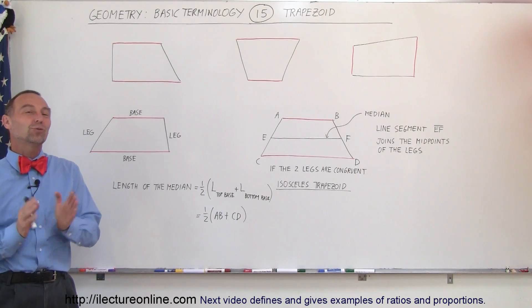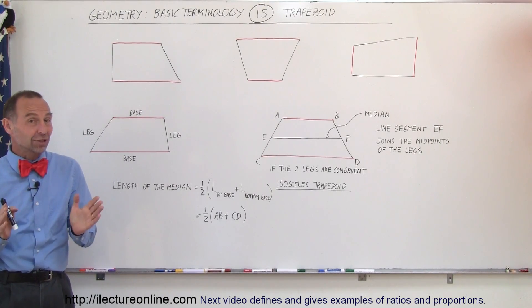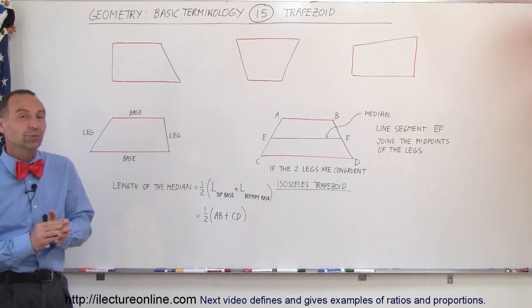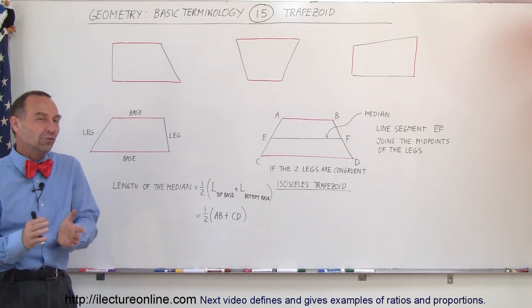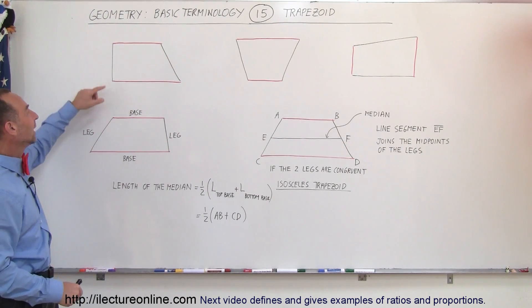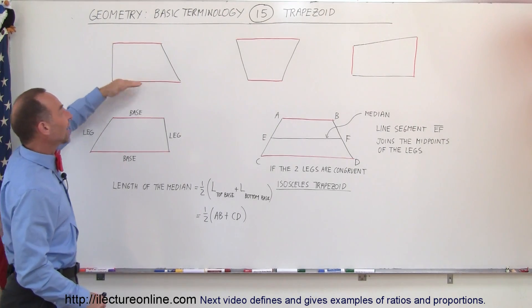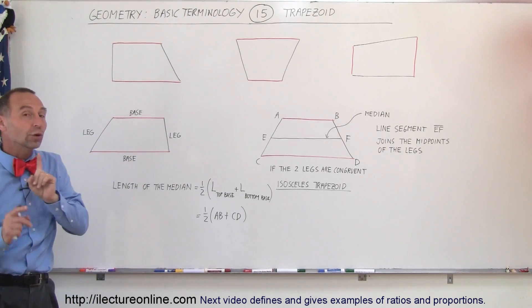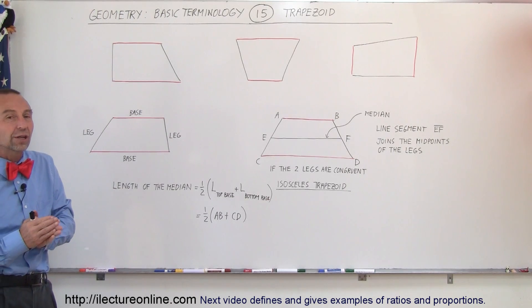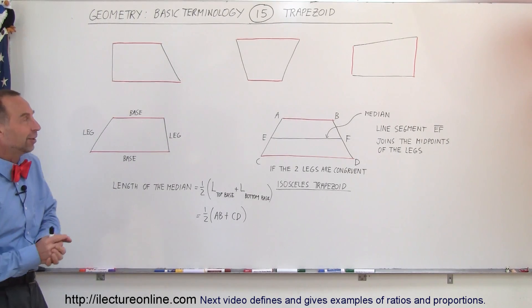Welcome to this lecture online. There's one more quadrilateral that we haven't talked about in the previous video — it's called the trapezoid. The trapezoid is a quadrilateral that has only two sides that are parallel. The other two sides are not parallel to one another, which makes it not a parallelogram.